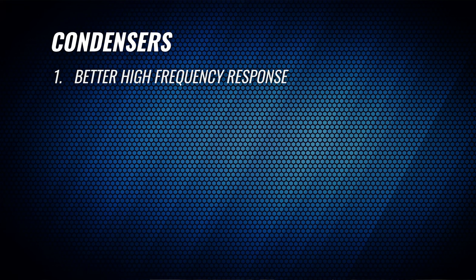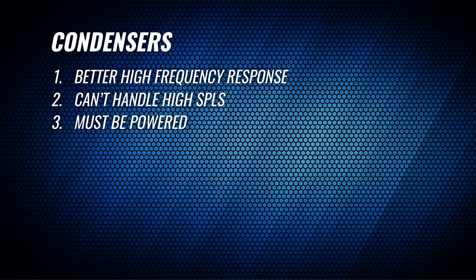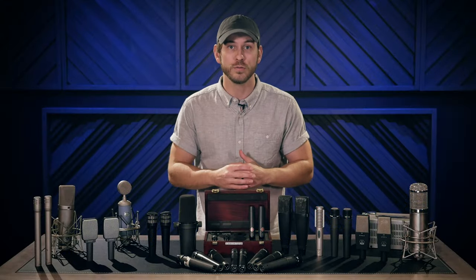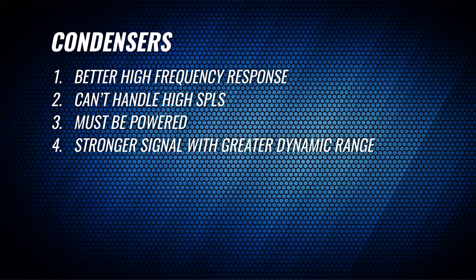Condenser mics generally pick up ultra-high frequencies much easier than dynamic mics, but on average can't take as much SPL as a dynamic microphone. Condensers need to be powered by a power supply, battery, or phantom power. Since they use a capacitor to convert the acoustical energy into electrical energy, the result is a stronger signal with a greater dynamic range.